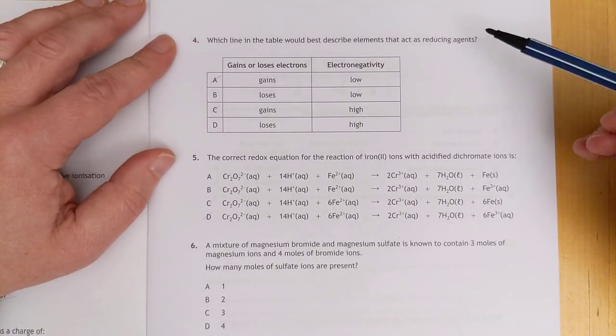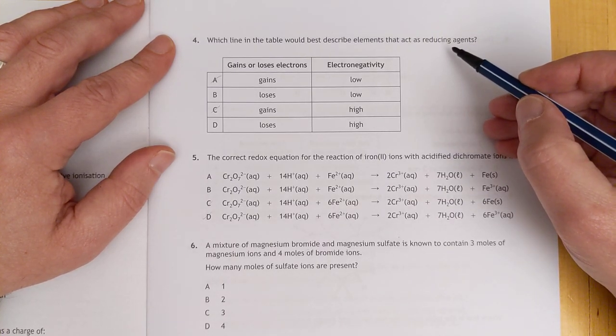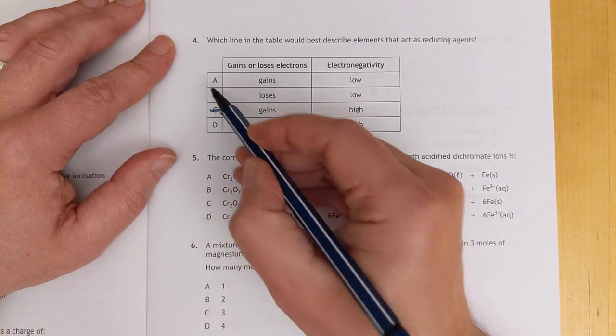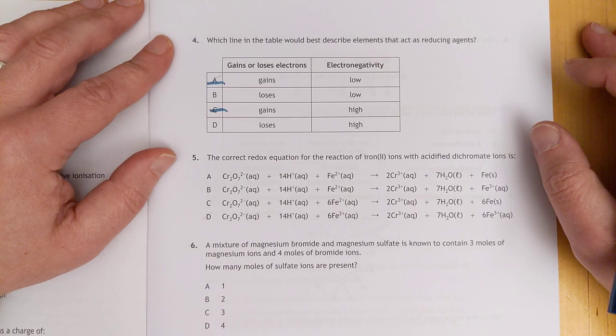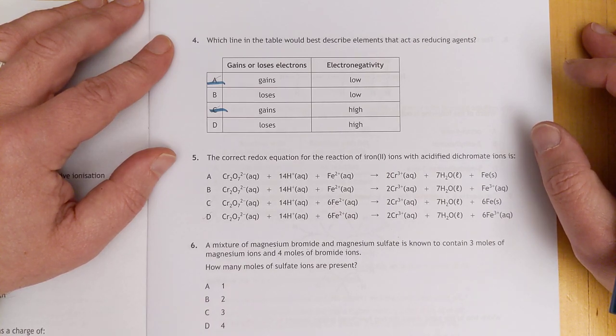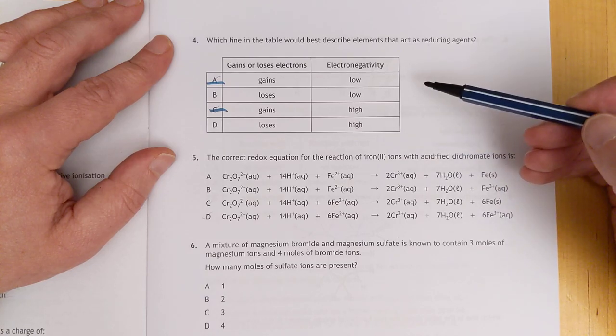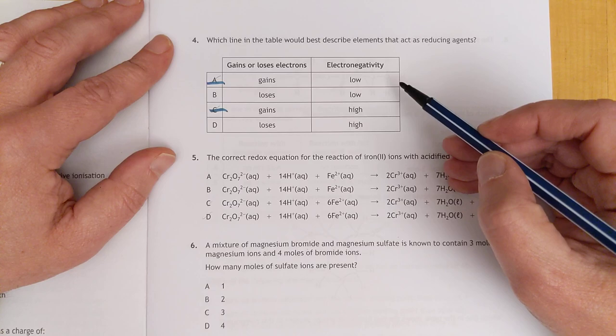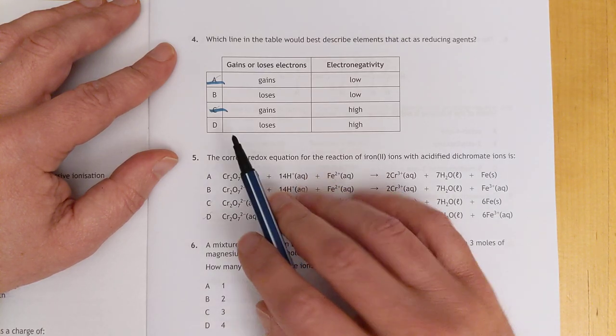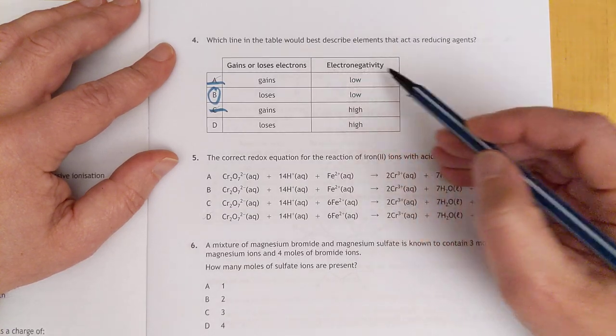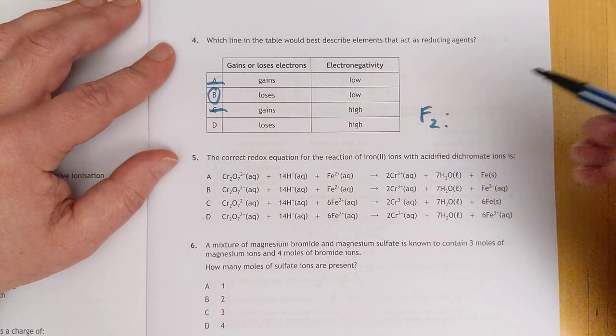Number four. Which line in the table best describes elements that act as reducing agents? Reducing agents get oxidized themselves, so therefore they will lose electrons. So we can throw that and that out. I'm going to look at my data book. High electronegativity things are down the bottom of the table, and they are oxidizing agents, so therefore it's going to be low electronegativity. Reducing agents. So we're going to go with B. Things that have a high electronegativity are things like fluorine gas. They do not get oxidized. Good luck trying to oxidize fluorine. So yeah, I'm going to go with B.